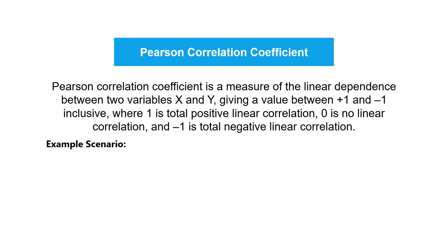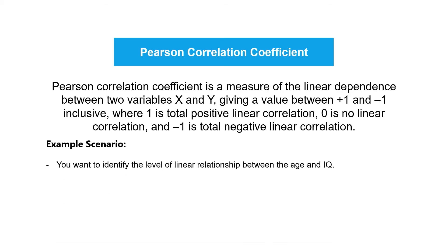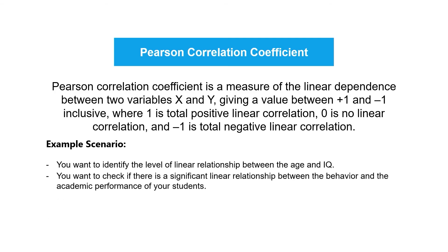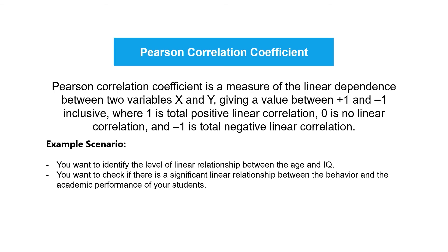Below are some examples where you can use the Pearson correlation coefficient. Notice that in each scenario, we measure two variables from each respondent and check if there is a linear relationship between these variables.